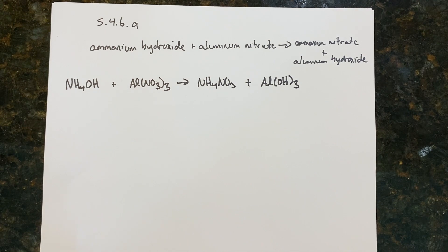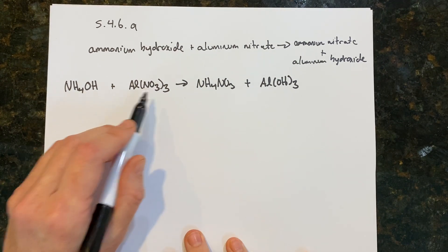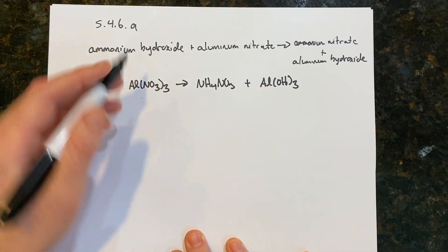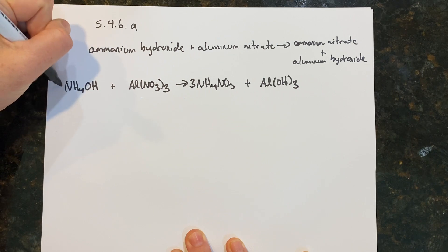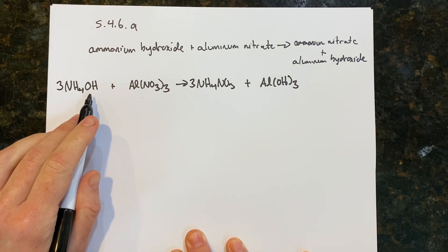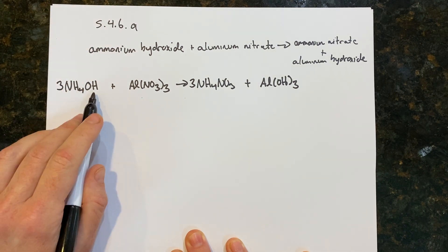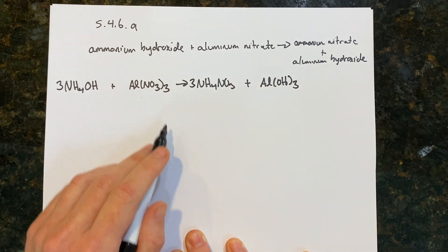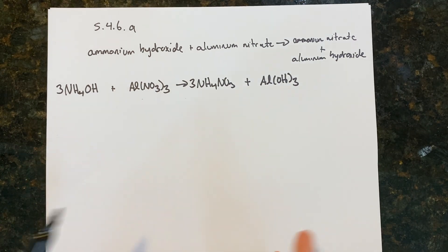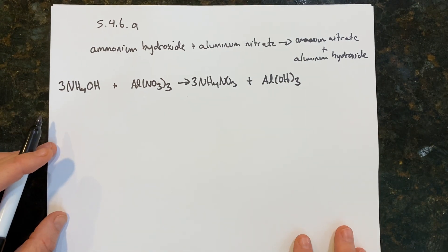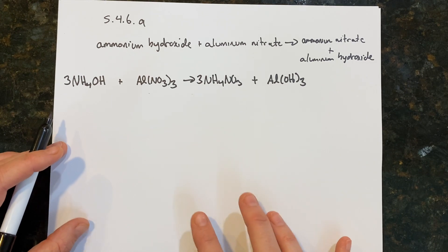Once we have the reaction written, we can go through and balance it. I see three nitrates, so I'm going to put a 3 in front of ammonium nitrate; that changes the number of ammonium, so I'll put a 3 in front of ammonium hydroxide as well. Checking: three, three, three, three, one, one — looks good, the equation is balanced.